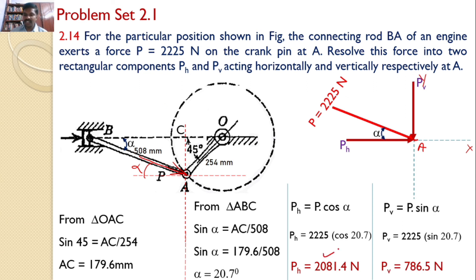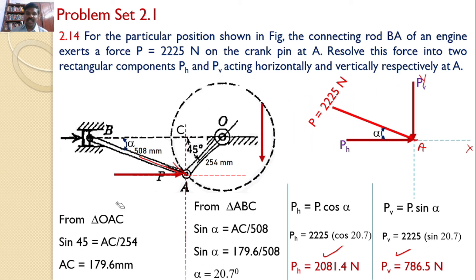These two values are the answers for this problem. Transferring these two forces back onto the original X, Y axes: pH acts along the x-axis, PV acts along the y-axis, and the original force P is the resultant of these two components.